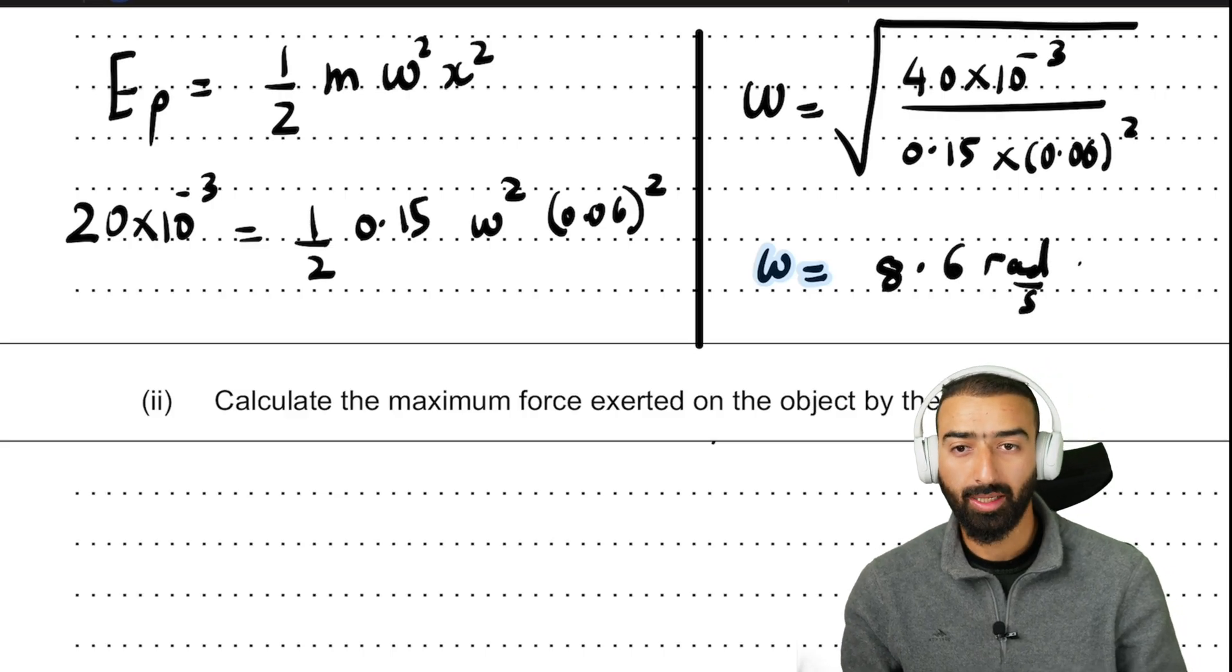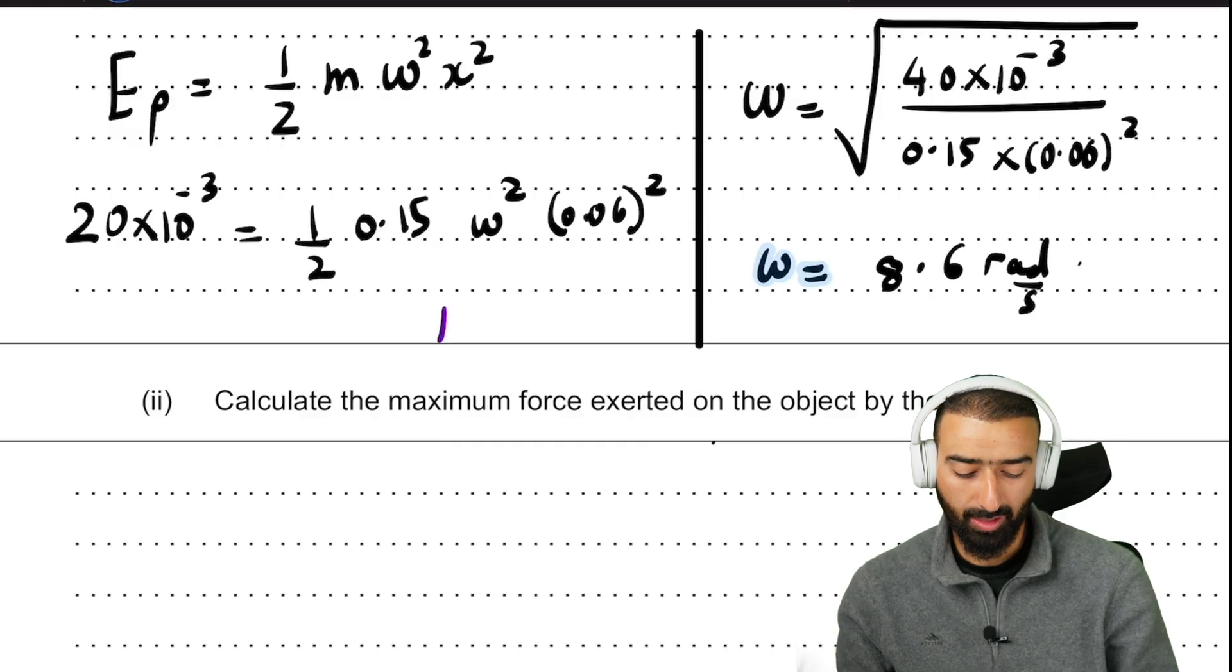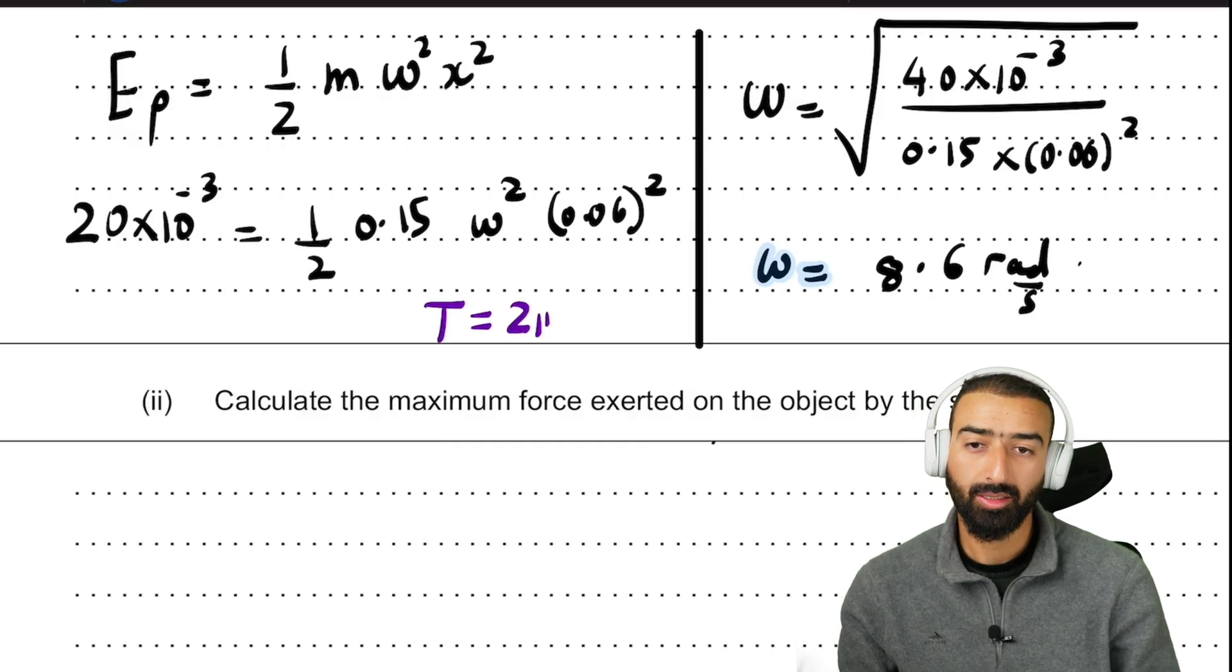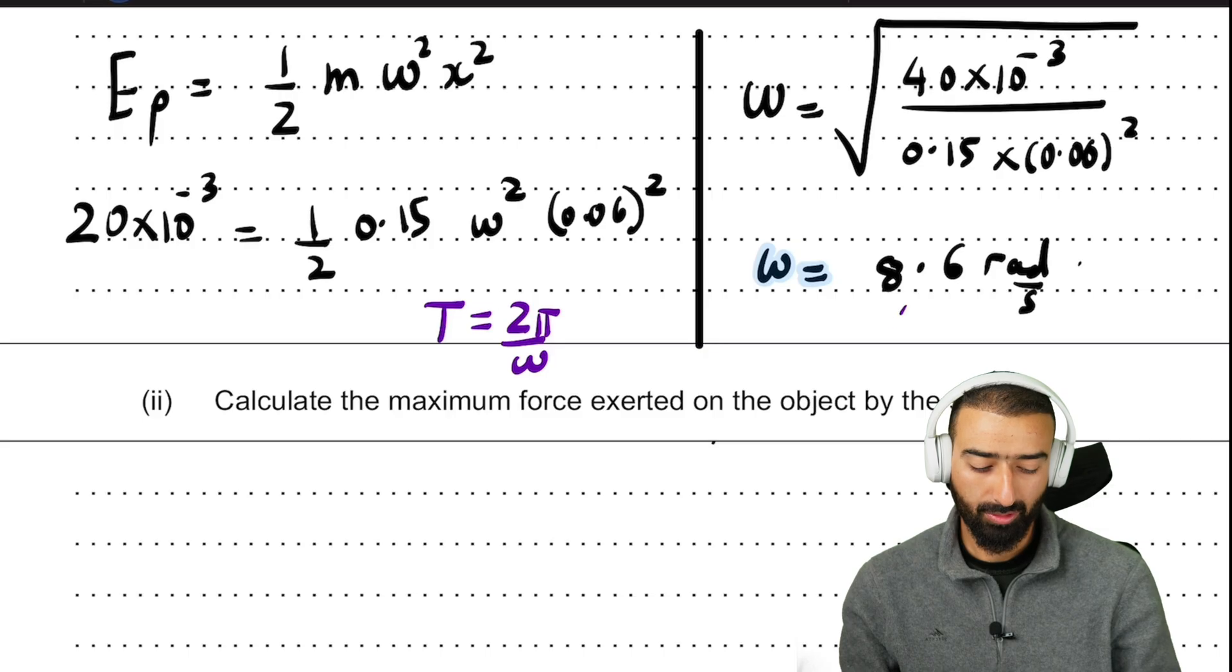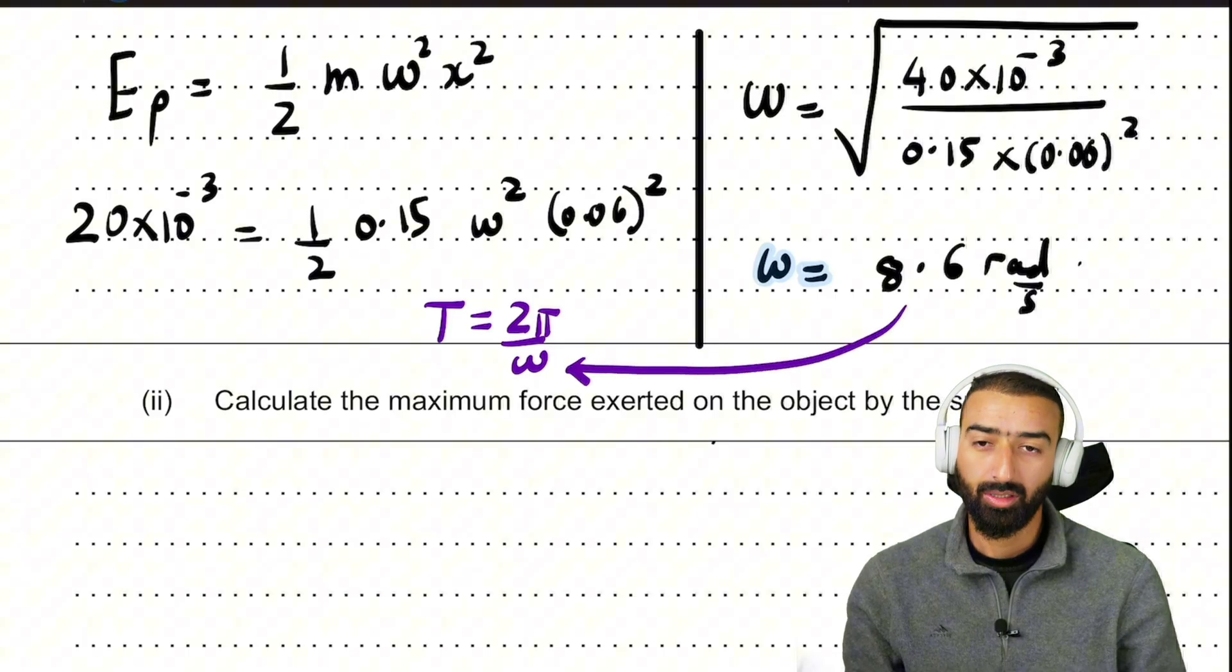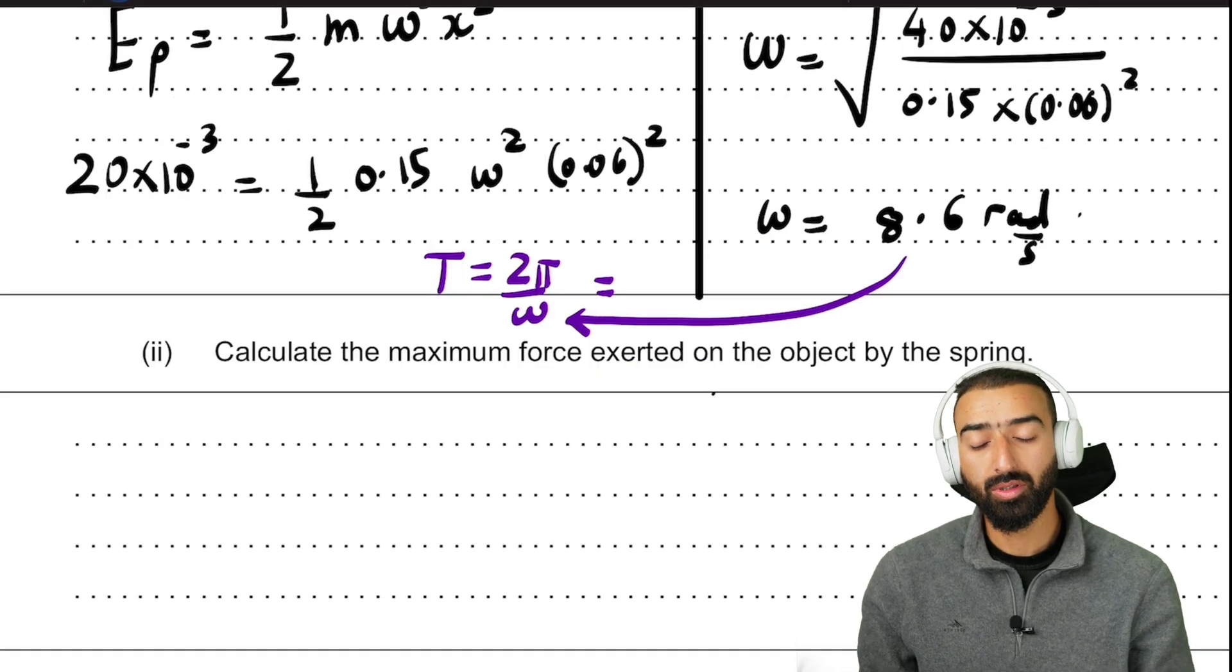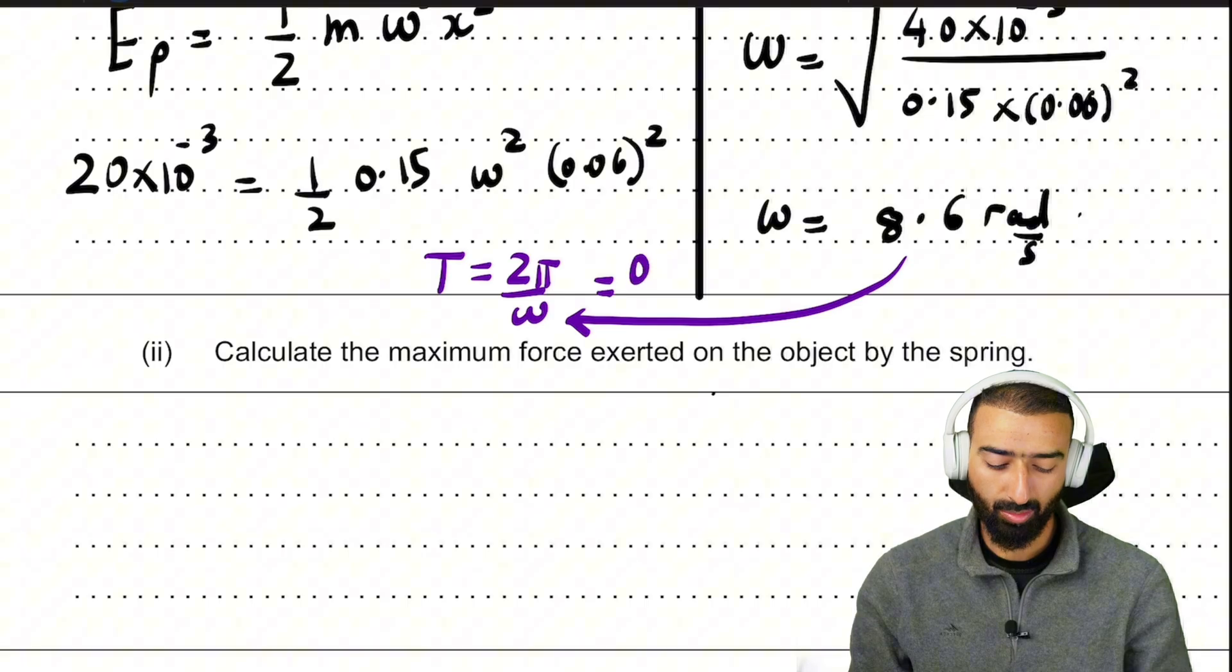Using omega, we can find the time period. Time period is given as 2 pi divided by omega. All we have to do is plug this value into our equation. This gives us a value of 0.73 seconds.